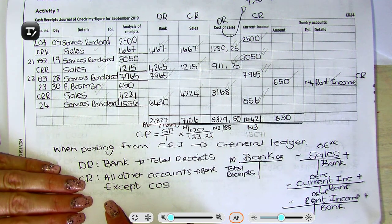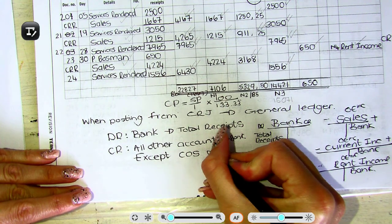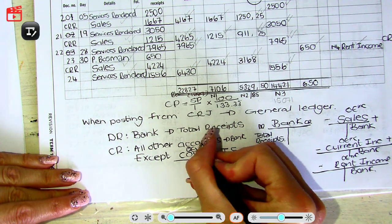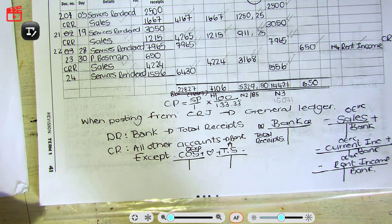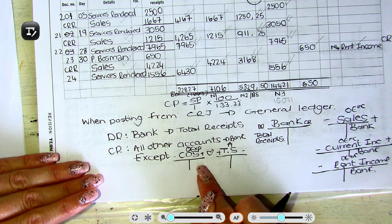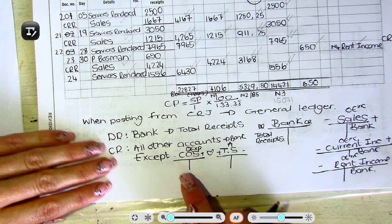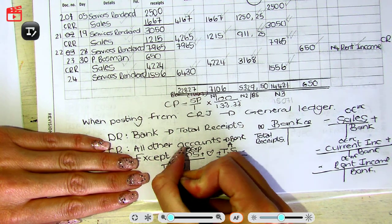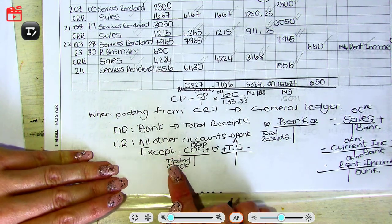Now what do we do with cost of sales? Cost of sales is a non-cash item — it has nothing to do with bank. Cost of sales is married to trading stock. Cost of sales is an owner's equity expense and trading stock is an asset. Expenses can never increase your owner's equity, so you can never make an entry on the credit side of cost of sales — it's an expense and it decreases my owner's equity. So we will debit cost of sales with the word "trading stock," and that column total will go on the debit side of cost of sales with the contra account trading stock.